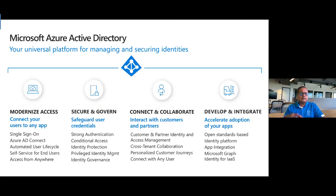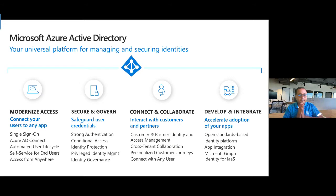Those already familiar with Azure AD Connect know it's the application that keeps your on-prem AD identities in sync with your cloud identities. That whole modernization aspect is a huge part of Azure AD. But once identities have been provisioned and single sign-on connectivity is in place, how do I secure it? And more importantly, how do I govern it? Governance isn't just about guardrails — it's also about how do I do onboarding and offboarding of my users.